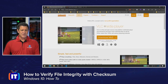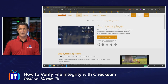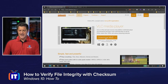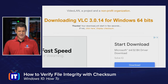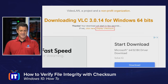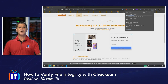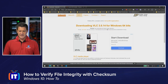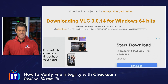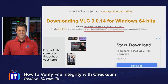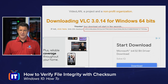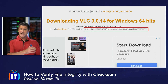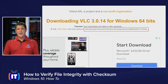Here I'm on VideoLAN Organization's webpage and they've got their VLC media player. If you click Download VLC, in little tiny print you'll see where it says Display Checksum. What they want you to do is download the file and then click there and it's gonna display this number. This is the actual checksum — the answer to a mathematical equation. We take this file, run it through a hashing algorithm, and generate this value.